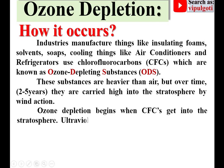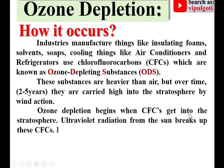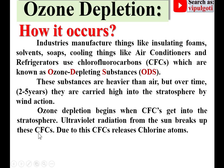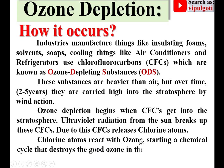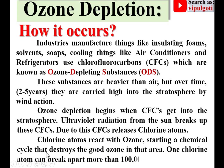Ozone depletion begins when chlorofluorocarbons get into the stratosphere. Ultraviolet radiation from the sun breaks up these CFCs, causing them to release chlorine atoms. Chlorine atoms react with ozone, starting a chemical cycle that destroys the good ozone in that area. Approximately one chlorine atom can break apart more than one lakh ozone molecules.